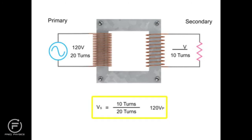Rearranging the formula and then dividing 10 turns by 20 turns, we get 0.5 multiplied by 120V. This results in a calculated step down voltage of 60 volts.